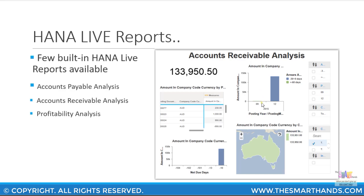You get a split by each different customer, and you also see by net due dates when amounts are due. You can run this for many different company codes and see amounts in different ranges. If you have geographical locations, you can see by geographical location as well — for example, within Australia you can see by states or by regions in different countries. All of this information is available on one single screen, which makes it much easier for analysis.